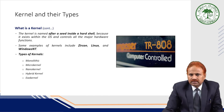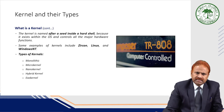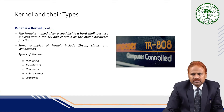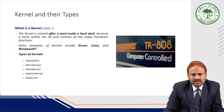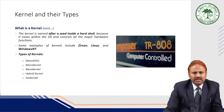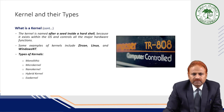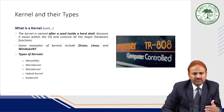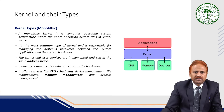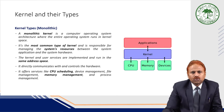Some examples of kernels include Zircon, Linux, and Windows NT. Depending on the architecture of the kernel, we have various kinds: monolithic kernel, micro kernel, nano kernel, exo kernel, and hybrid kernels. We will see each type of kernel one by one.